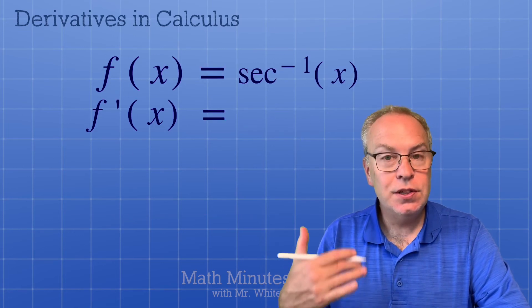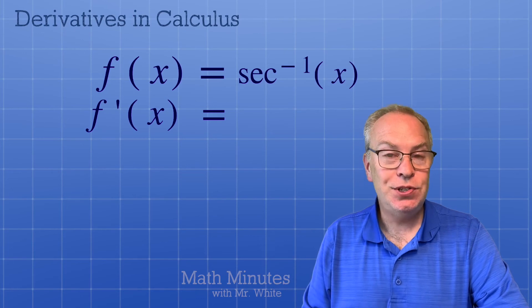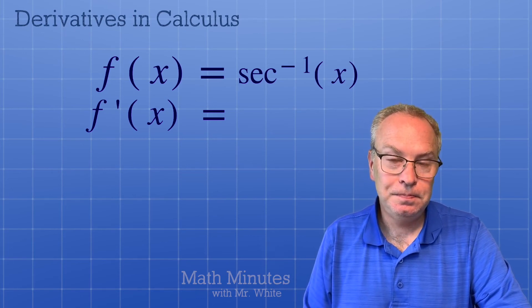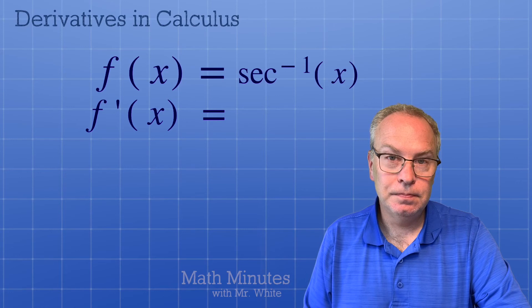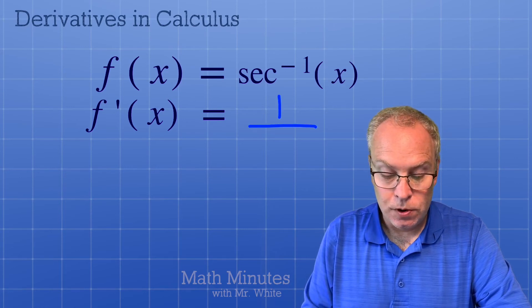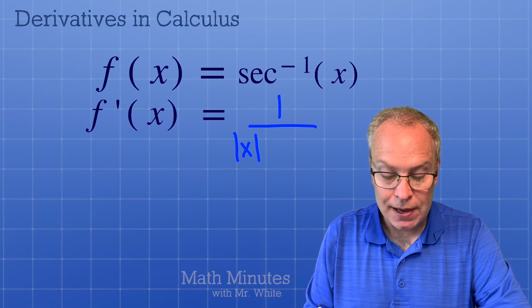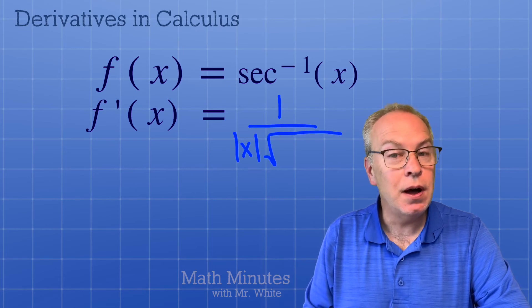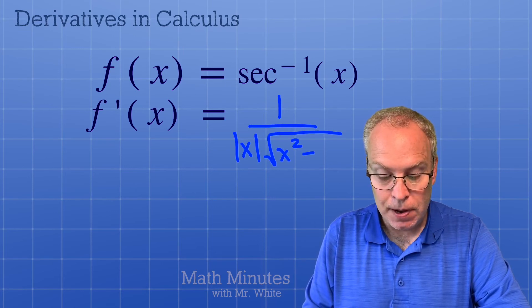What is the derivative of inverse secant? 1 over the absolute value of x times the square root of x squared minus 1.